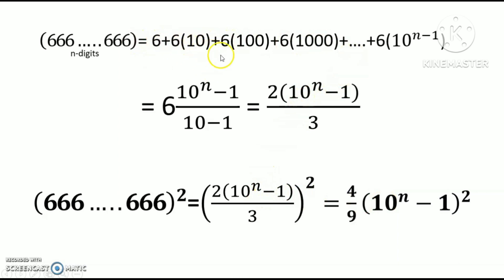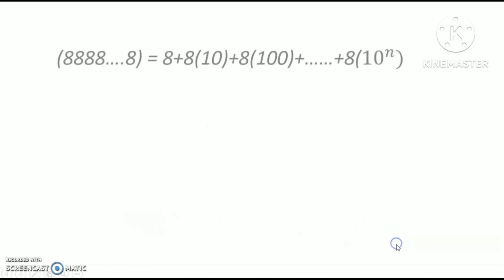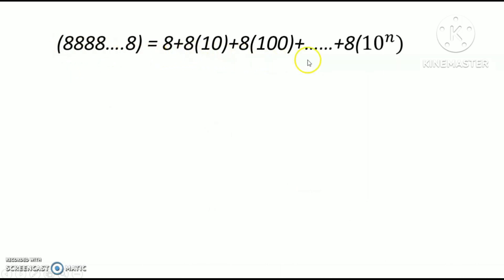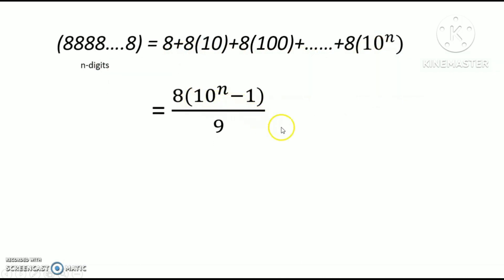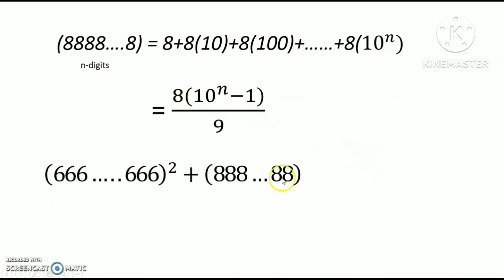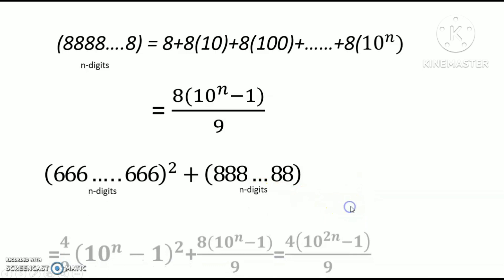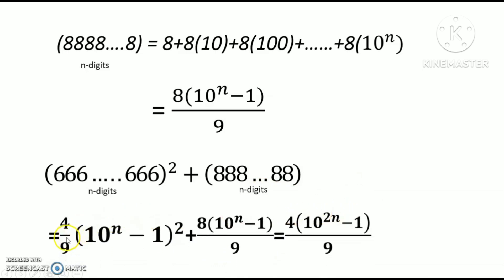Using the GP series formula for n digits, 888...8 can be written in the same way. This is the n-digit representation, and I get the value: 8 into (10 to the power n minus 1) divided by 9. Now the total value combining both n-digit terms can be written as (4/9)(10 to the power n minus 1) whole square plus...